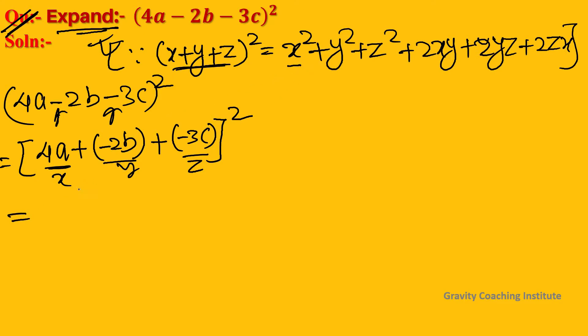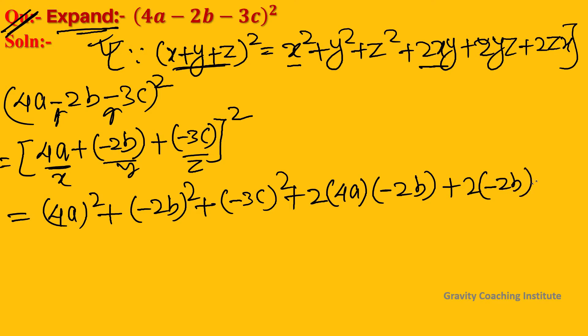So x² becomes (4a)², y² becomes (-2b)², and z² becomes (-3c)². For the cross terms, 2xy is 2 times 4a times -2b. For 2yz, we have 2 times -2b times -3c.